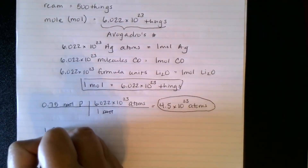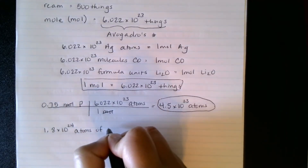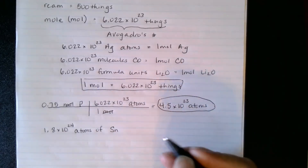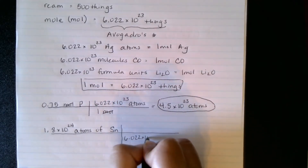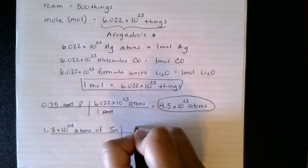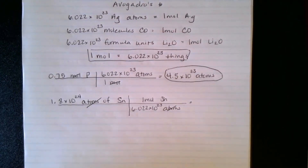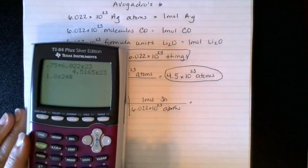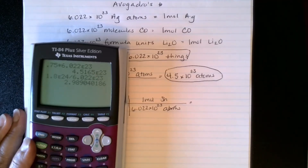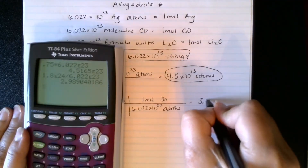Now I could go backwards. Let's say they give me atoms and want me to find moles. I would use the same conversion factor, but it's flipped this time: 6.022 times 10 to the 23rd atoms in 1 mole. Atoms cancel, and now I'm dividing: 1.8 times 10 to the 24th divided by 6.022 times 10 to the 23rd. Since 1.8 has two significant figures, I get two significant figures — 3.0 moles.